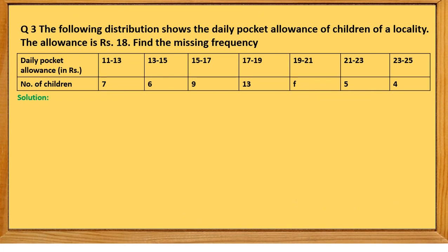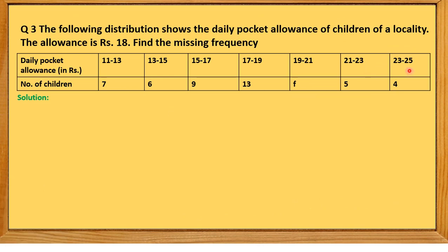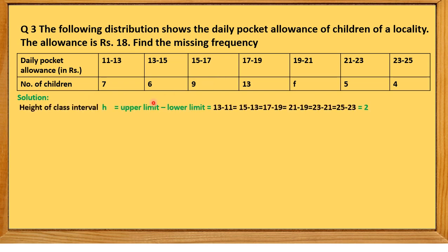The daily pocket allowance is given in grouped form: 11–13, 13–15, 15–17, 17–19, 19–21, 21–23, 23–25, and the number of children are given. We have to find the missing frequency f, and we will use the Step Deviation Method to find the mean of the given data.